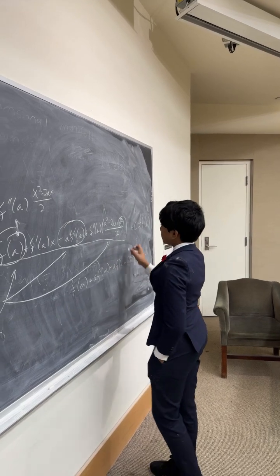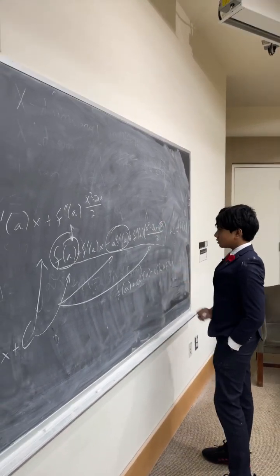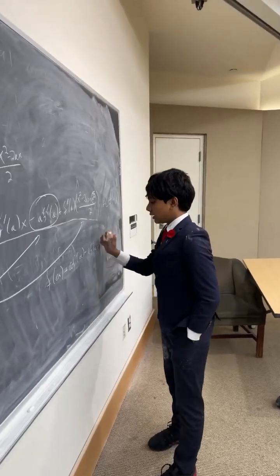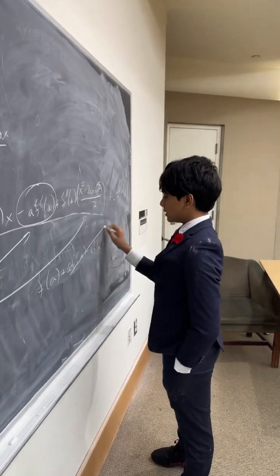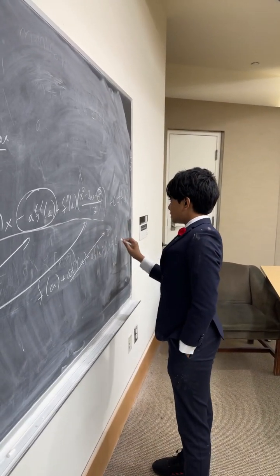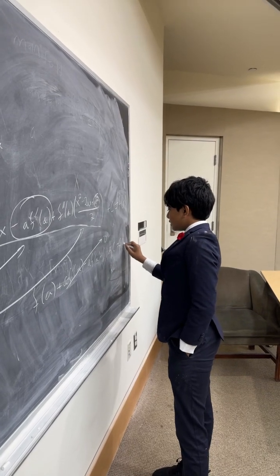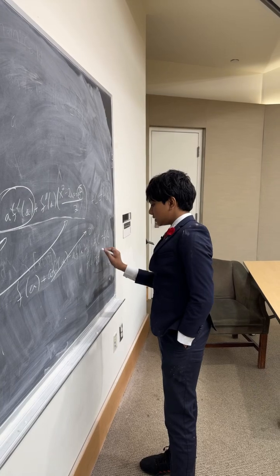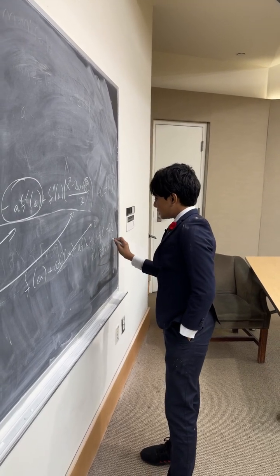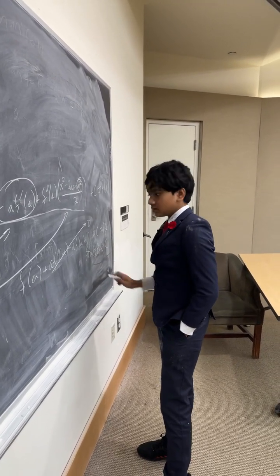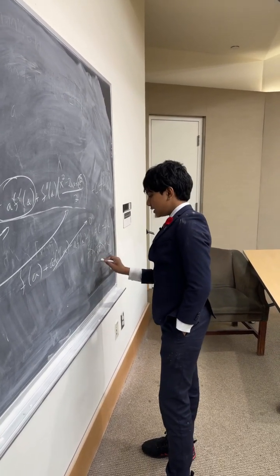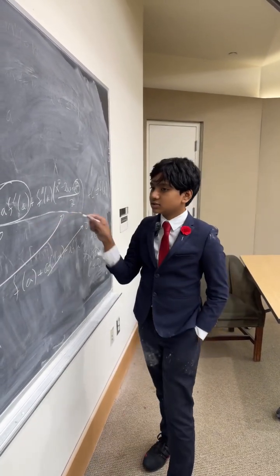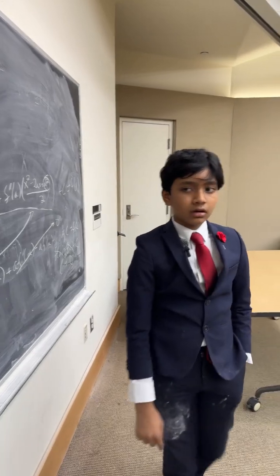So, that is the proof of the Taylor approximation, but we're not done yet. Let's move back to this. How can we prove the Taylor approximation with e to the x? Well, first of all, recall that d/dx of a to the x is equal to a to the x times ln a.